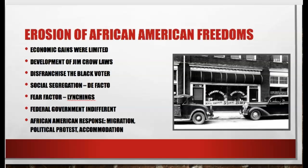Over the past several weeks we've been studying the civil rights movement, breaking it down into case studies. The current case study is focusing on African Americans. To give a little historical context to the civil rights movement in regards to African Americans, I want to focus on the erosion of African American freedoms. Economic gains seem to be limited. There was a development of the Jim Crow laws in those 11 ex-Confederate states, but you can also find Jim Crow type laws in other US states as well. And we're going to call this de jure segregation — legal segregation. The disenfranchisement of black voters is still continuing, and the establishment of social segregation is occurring in a number of states as well. And we're going to call that de facto, which is segregation by tradition or by custom.